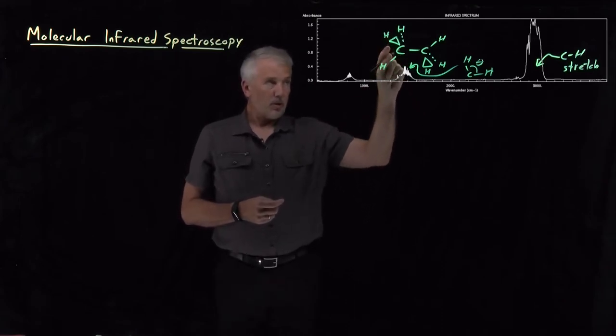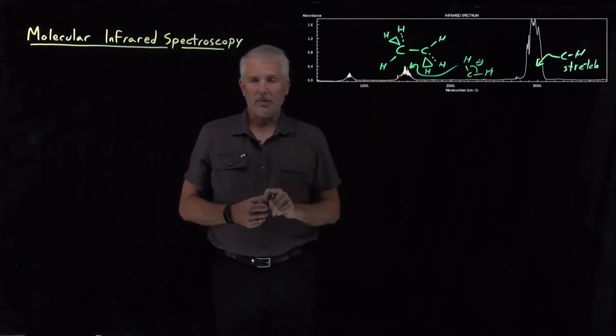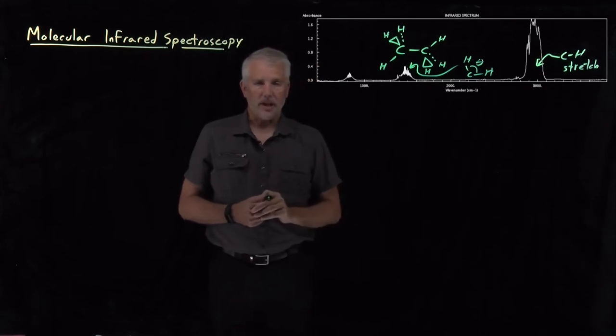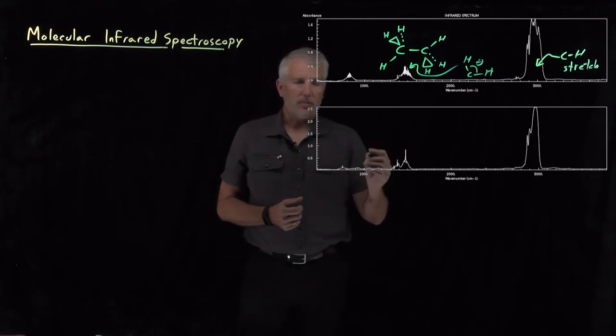But because we have only carbons and hydrogens, only a few different types of bonds, only a few different types of angles, there's only a few different bands in which this molecule absorbs light. If I also show you a similar spectrum for a more complicated molecule, propane.